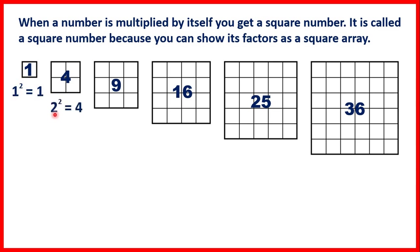Two squared is four because two times two is four. Three squared is nine because three times three is nine. And remember this little two doesn't mean multiply by two — it means multiply the number by itself, and three times three is nine.